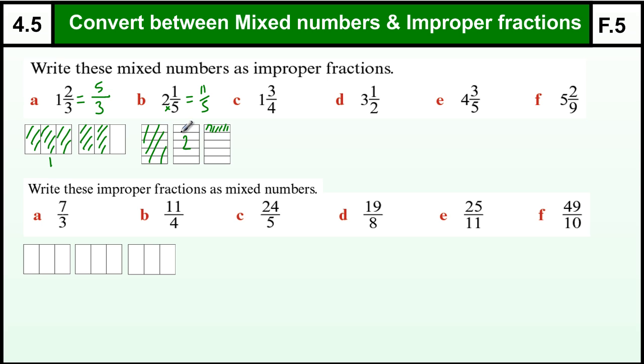Plus the 1 on the top makes 11. If I do 1 times 4, I will have 1 lot of 4 quarters, plus the 3 on the top makes 7/4. If I have got 3 and 1/2, each of those 3 is split up into 2, so we have got 3 lots of 2 which is 6, plus 1 is 7/2.